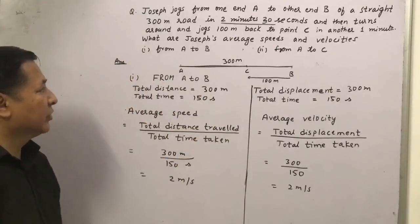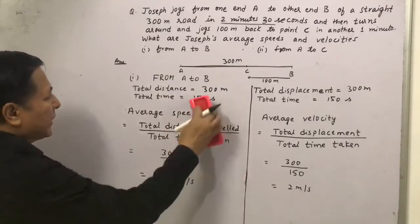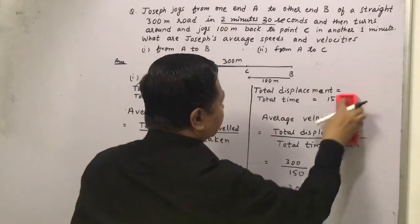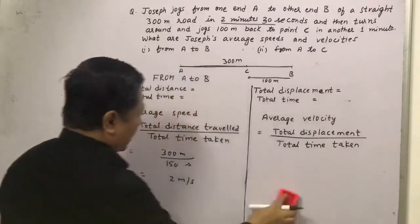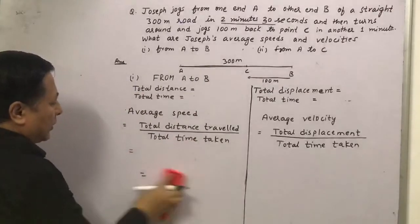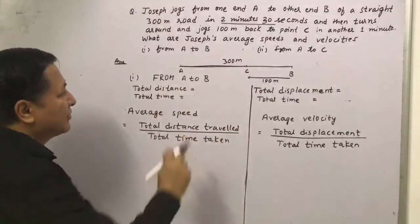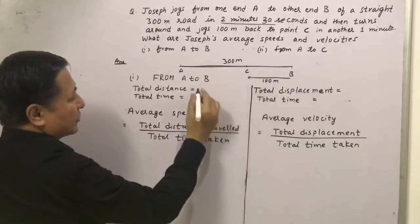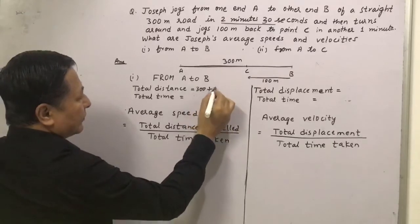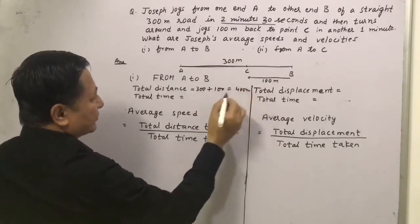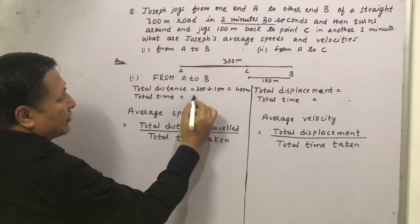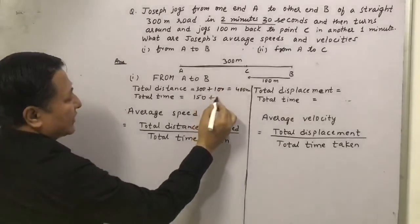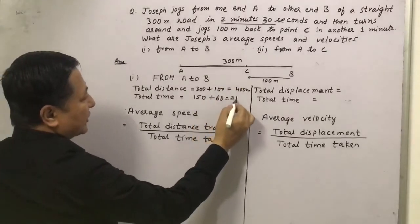Now we will calculate from A to C. For A to C, the distance and displacement will change. The distance from A to C is 300m plus 100m, which equals 400m. The time is the earlier 150 seconds plus the return time of 1 minute, that is 60 seconds, giving a total of 210 seconds.